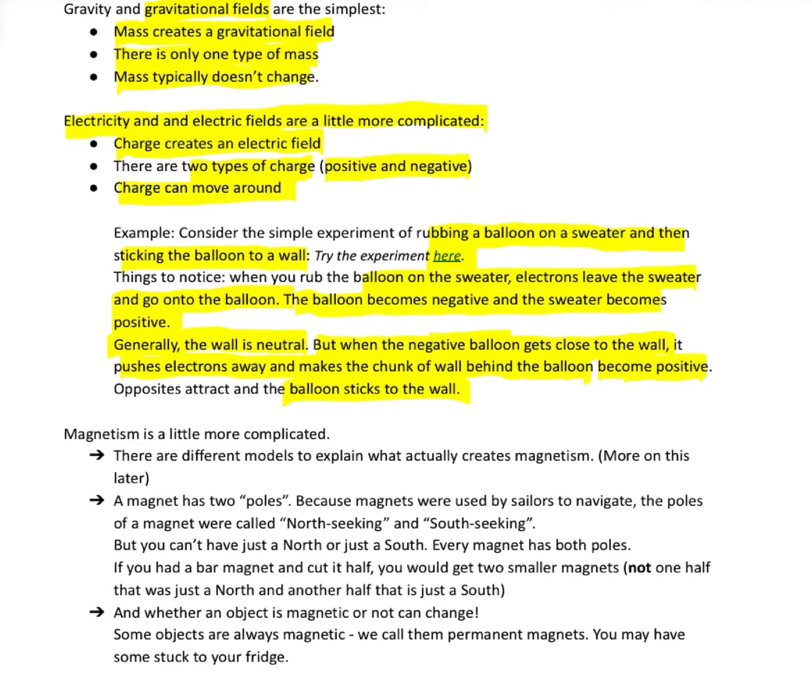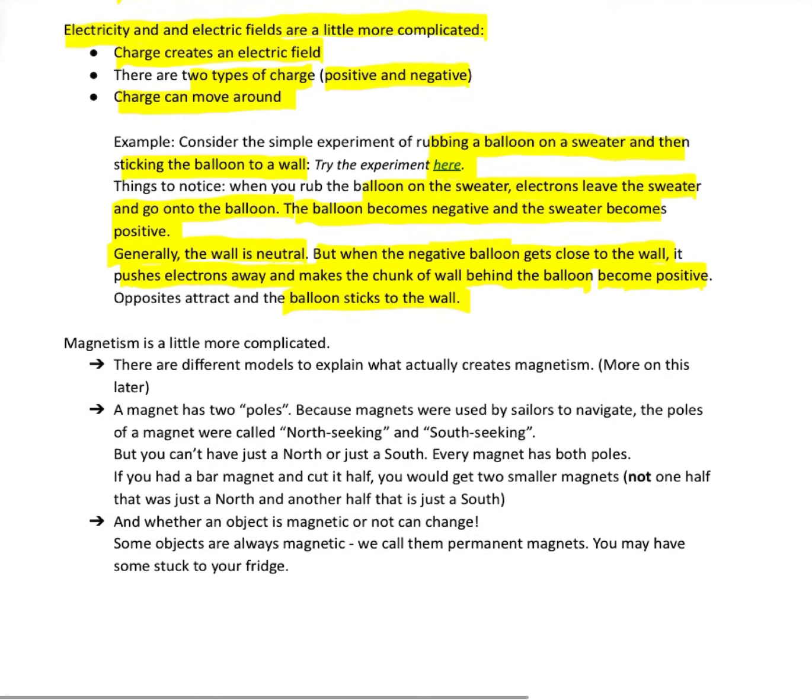Opposites always attract. So now our negative balloon is close to a positive wall. The balloon will stick to the wall. That's kind of a neat wrinkle with electricity that we don't get with gravity. And it's very similar to an effect we get with magnetism.